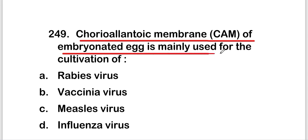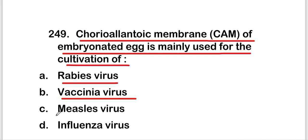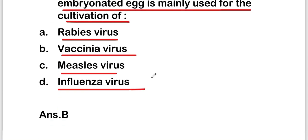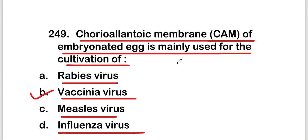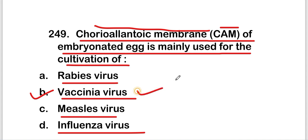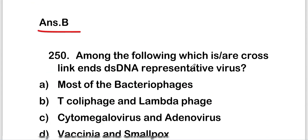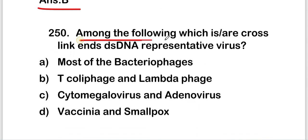The next question: the chorioallantoic membrane (CAM) of an embryonated egg is mainly used for the cultivation of rabies virus, vaccinia virus, measles virus, or influenza virus? The right answer is option B — vaccinia virus. The CAM of an embryonated egg is mainly used for the cultivation of vaccinia virus.